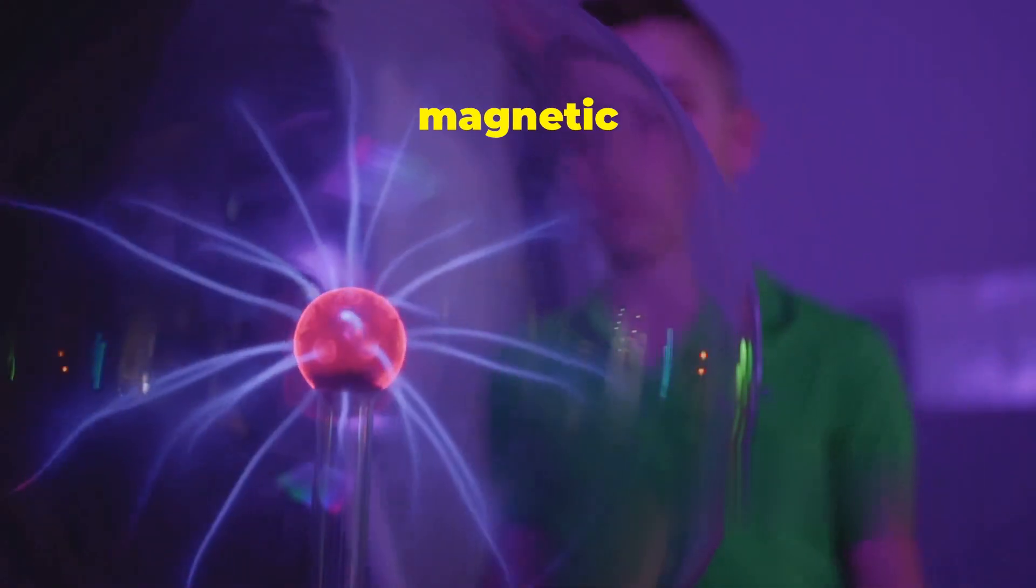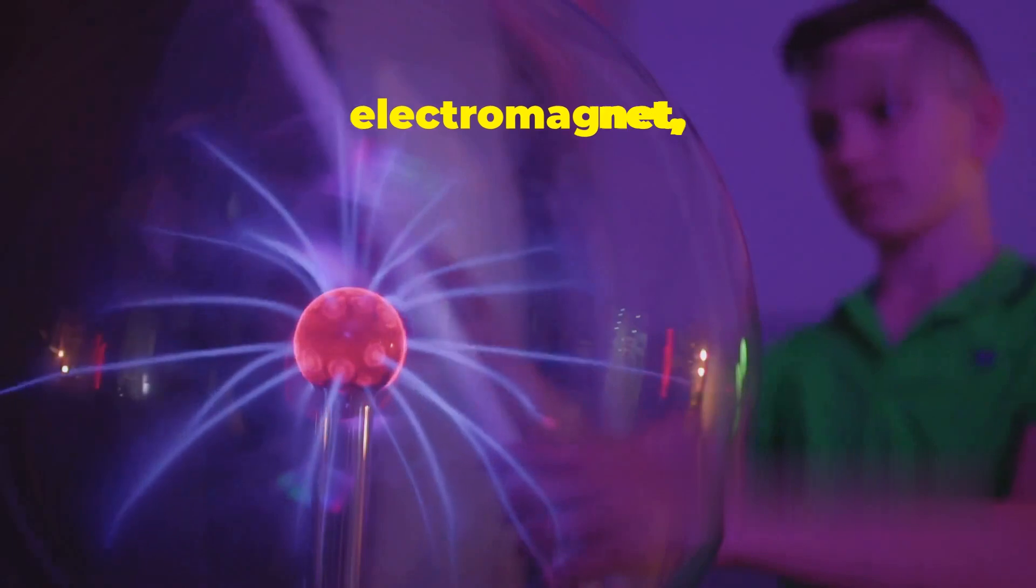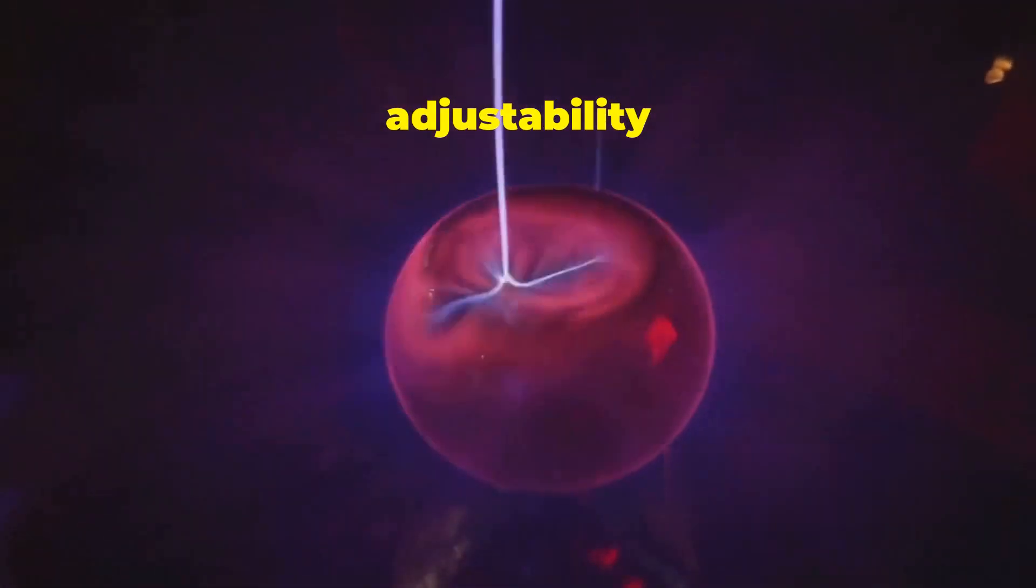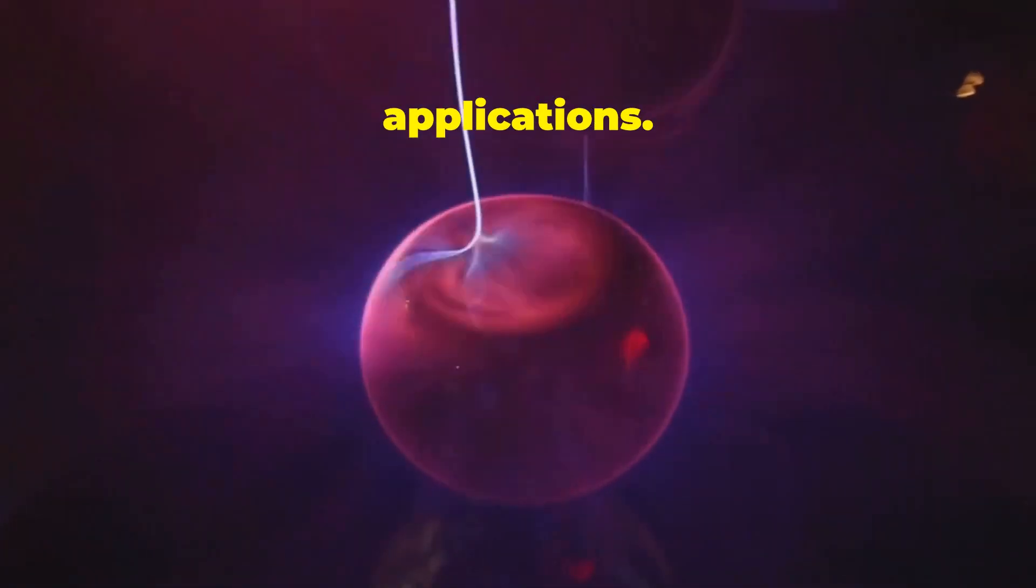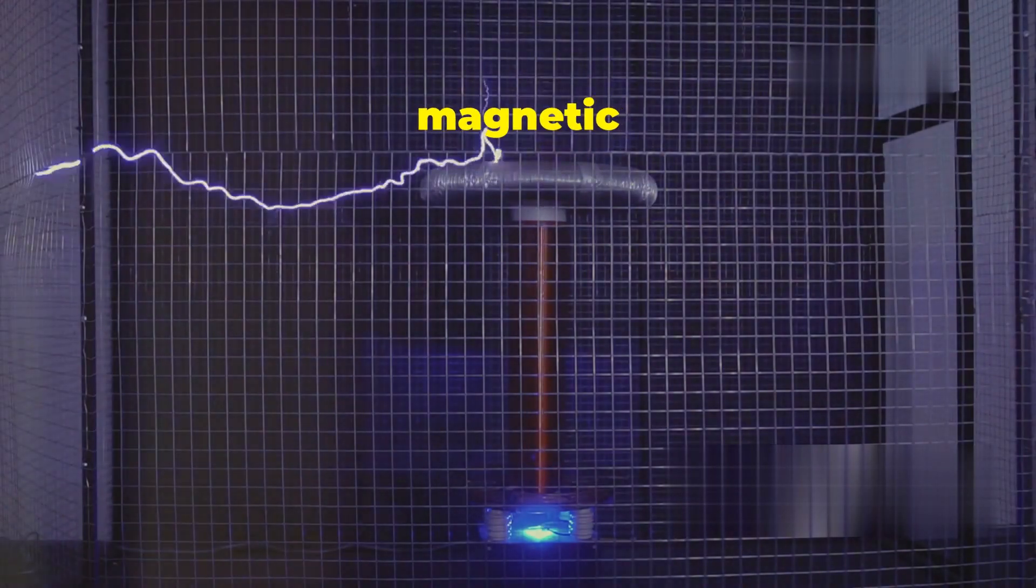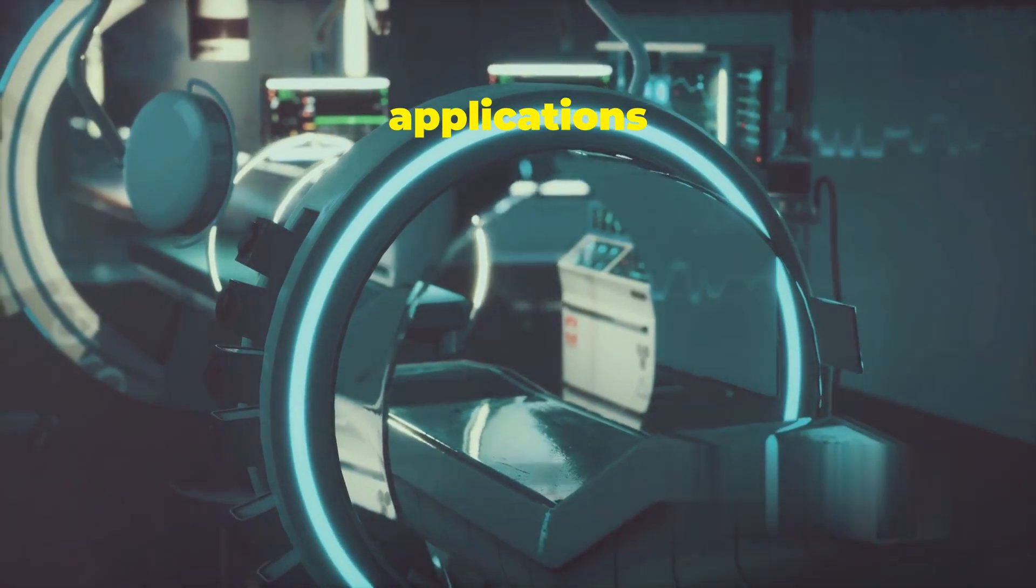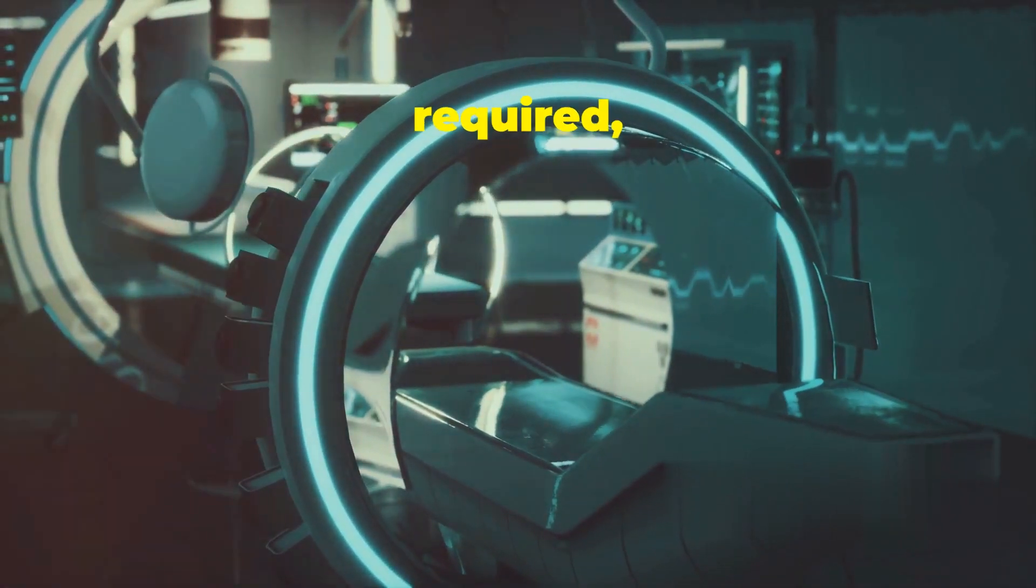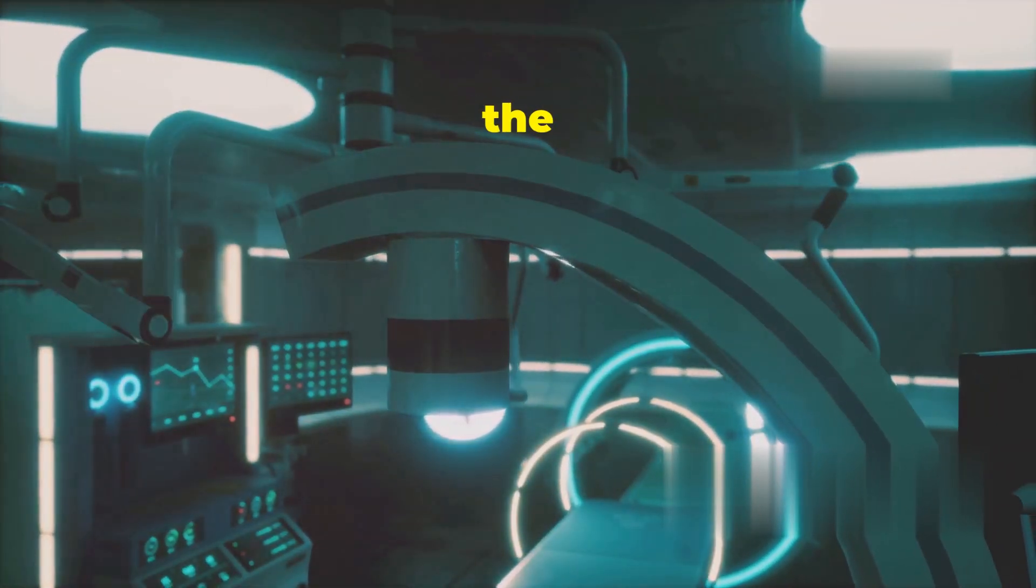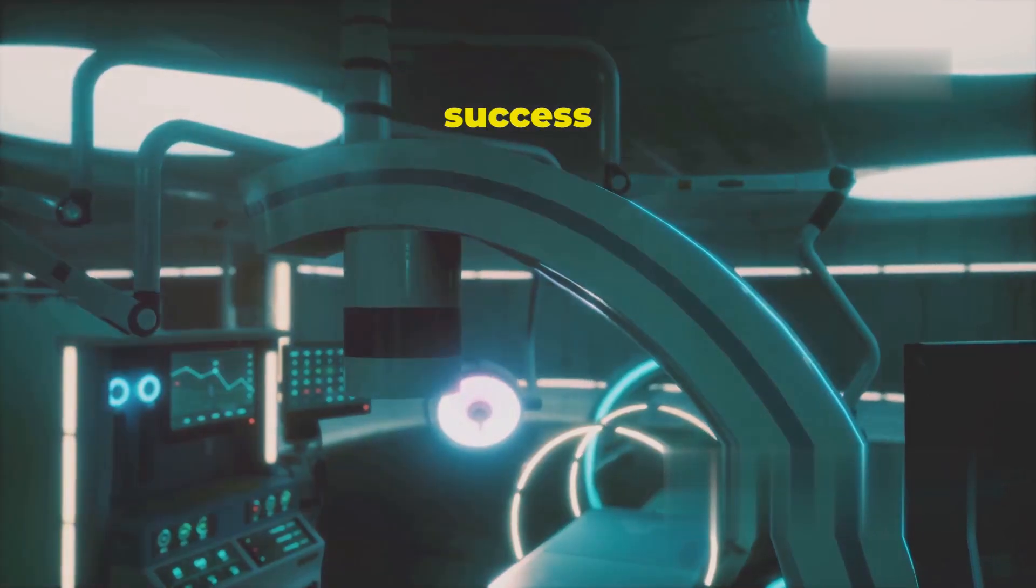Adjustable strength: Need a stronger magnetic field? No problem. Simply increase the electric current flowing through the electromagnet and voila, the magnetic field intensifies. This adjustability is crucial in many technological applications. Reduce the current and the field weakens. This ability to fine-tune the magnetic field is essential in precision tasks. This dynamic control is crucial in applications where precise magnetic force is required, such as in medical imaging or particle accelerators. In these fields, the ability to adjust the magnetic field can mean the difference between success and failure.